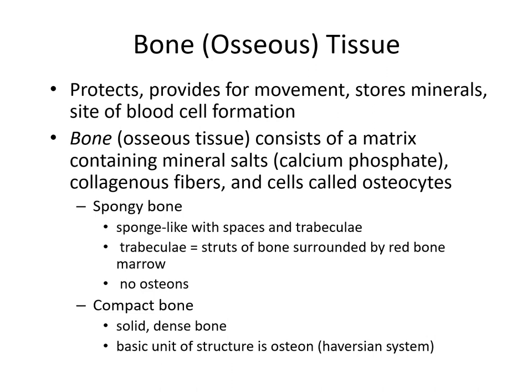Bones are also where red blood cells are formed — within long bones, for instance, we have the formation of blood cells. Bone consists of a matrix containing mineral salts — calcium phosphate is the most important — along with collagen fibers and cells called osteocytes that maintain the bone. We have two types of bone. Spongy bone consists of a meshwork of bony struts called trabeculae with red bone marrow in between — there are no osteons in spongy bone. Compact bone is very dense and solid, making up the outside layer of long bones, and is comprised of osteons.